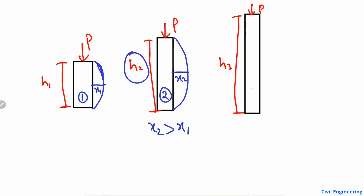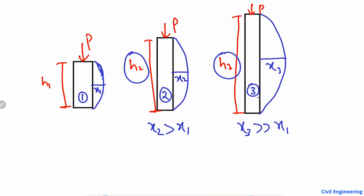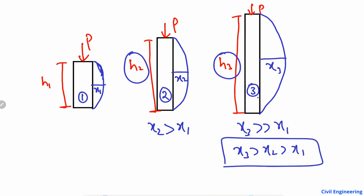If we have the same geometry and same material across all three columns, the third column — with the highest height h3 — will show the highest deformation in the lateral direction. So x3 is much higher than x1 and x2, meaning x3 > x2 > x1. This lateral deformation is what we call buckling.